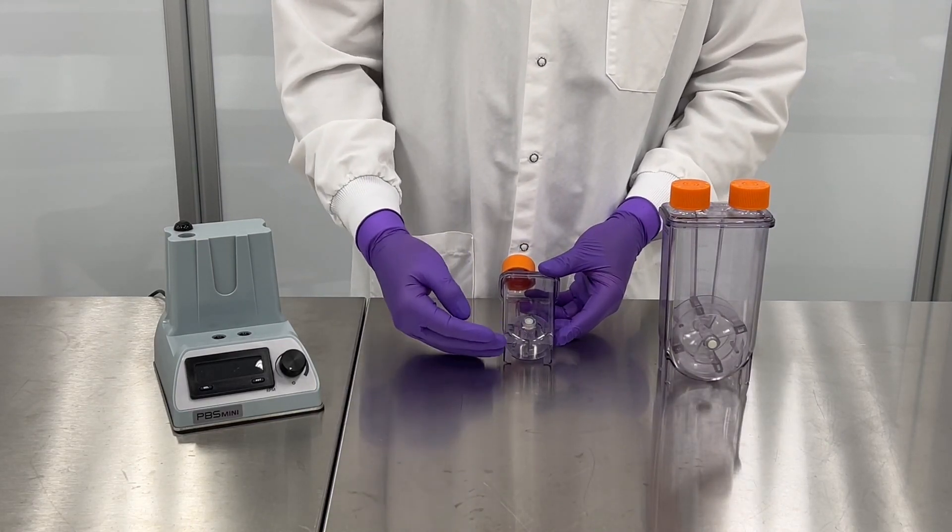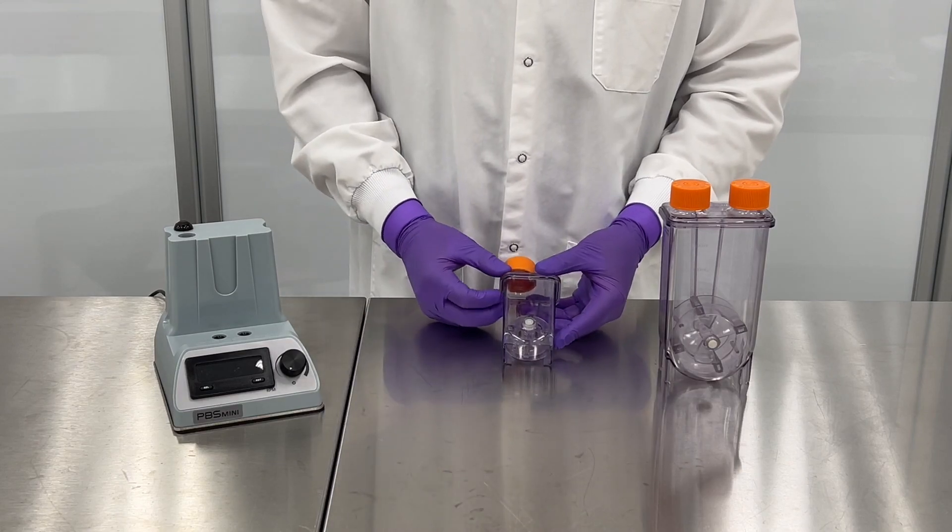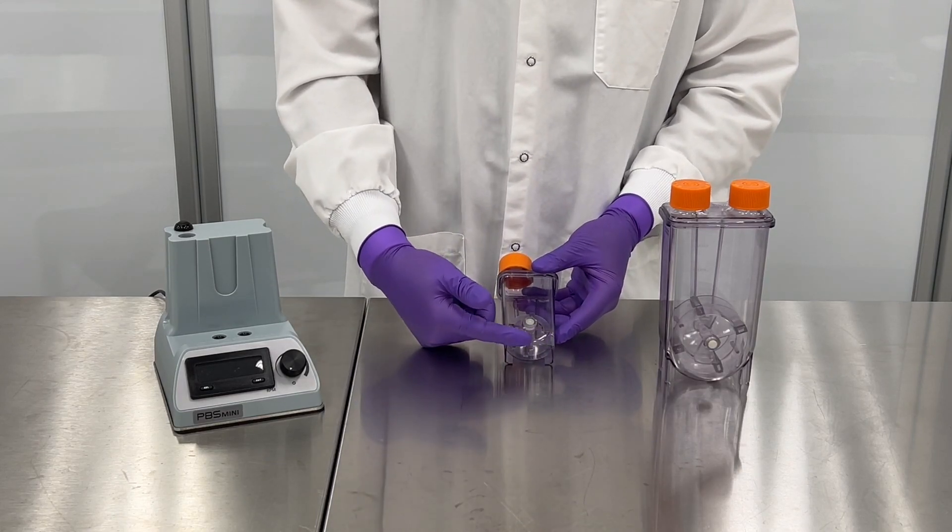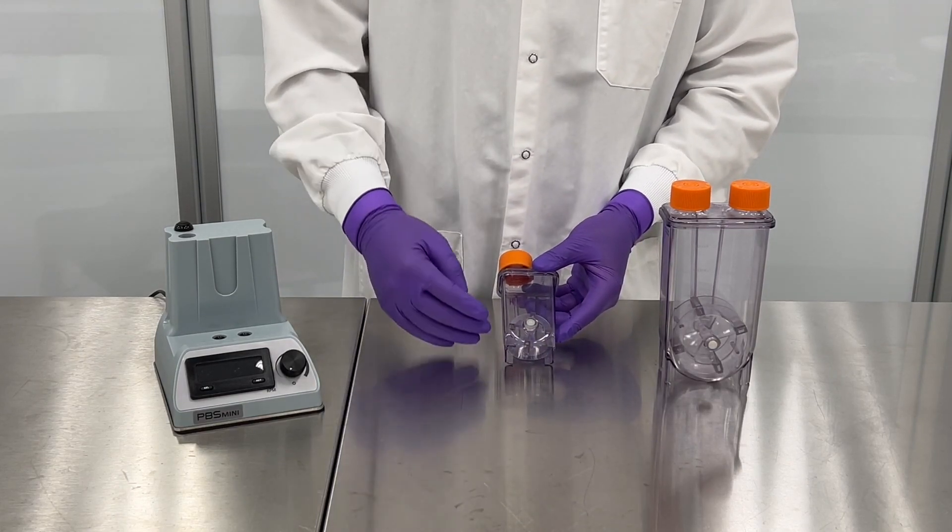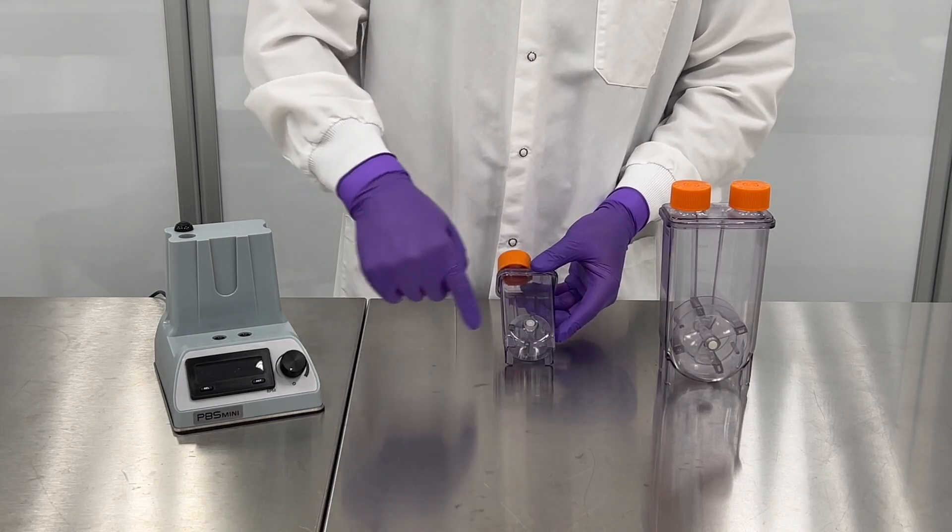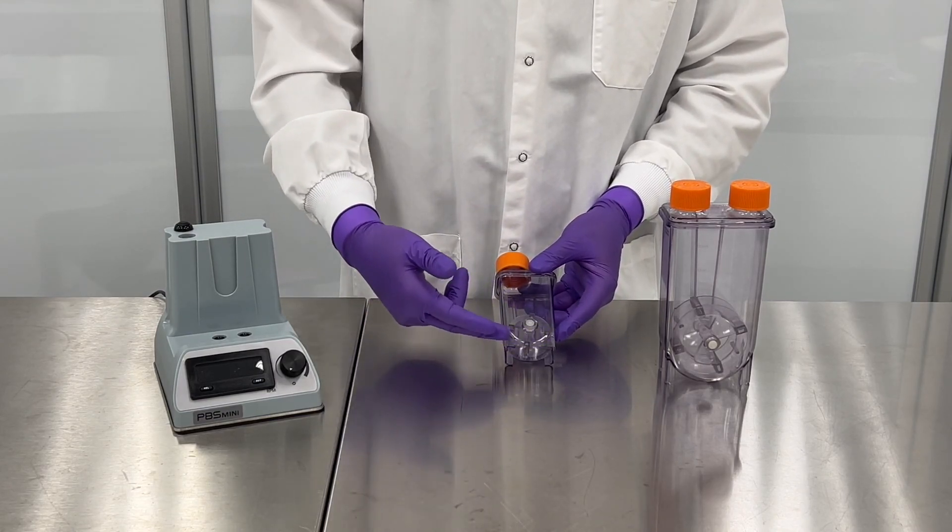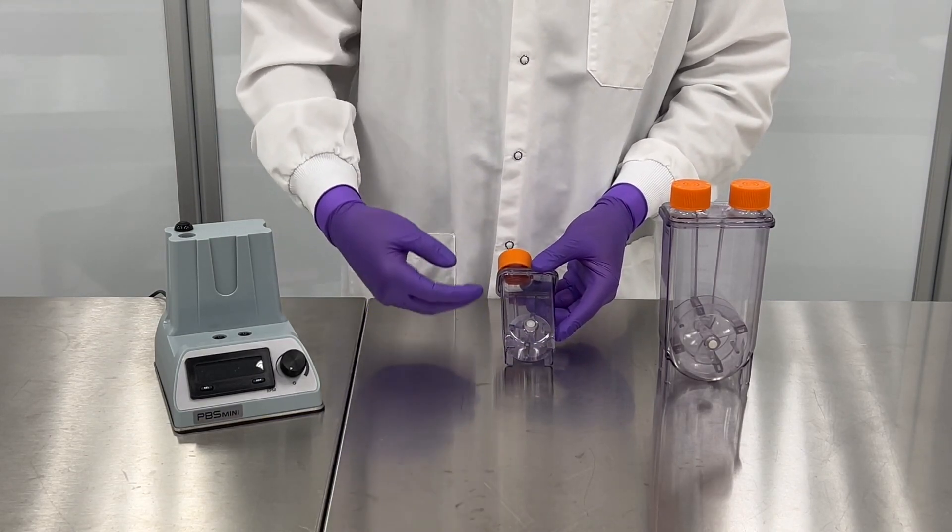Starting from the bottom here we have four feet so that actually helps it stand up. We have our u-shaped bottom that is coupled with our vertical wheel impeller so as that spins we have a nice laminar flow on the bottom which allows for our overall gentle mixing.